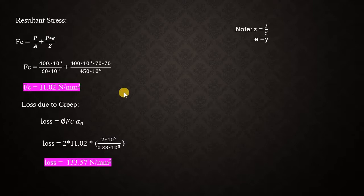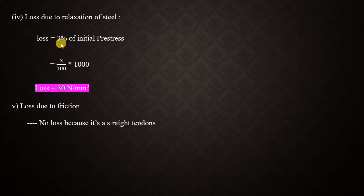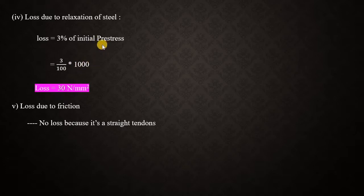The fourth loss is loss due to relaxation of steel. In the question, the relaxation of steel is given as 3%. The loss is 3% of the initial prestress: (3/100) × 1000 = 30 N/mm².